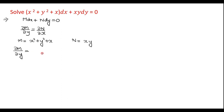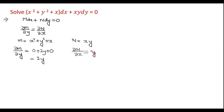With respect to y, x is treated as a constant. The derivative of x² with respect to y is 0, the derivative of y² is 2y, and the derivative of x is also 0. So ∂M/∂y = 2y. Similarly, ∂N/∂x is the partial derivative of N with respect to x. With respect to x, y is constant and the derivative of xy is y. We note that ∂M/∂y is not equal to ∂N/∂x, so the equation is not exact.